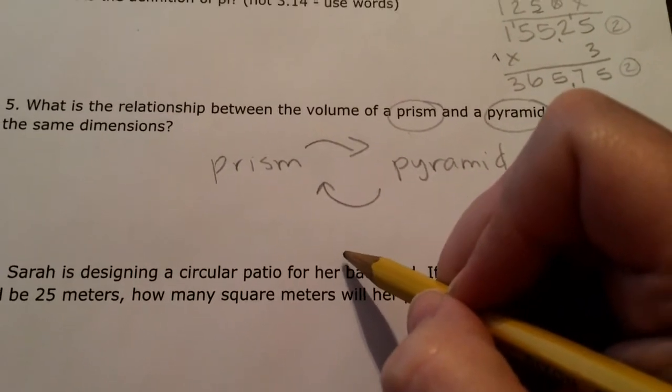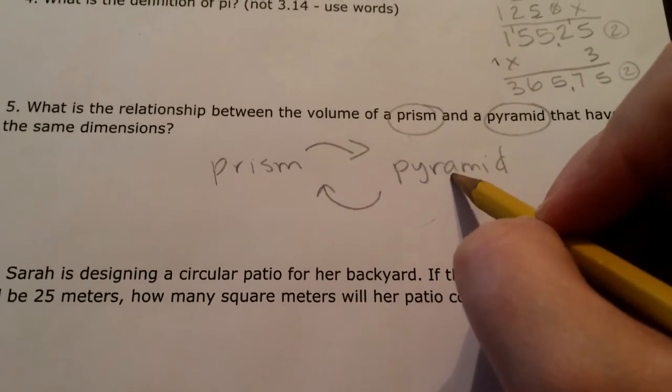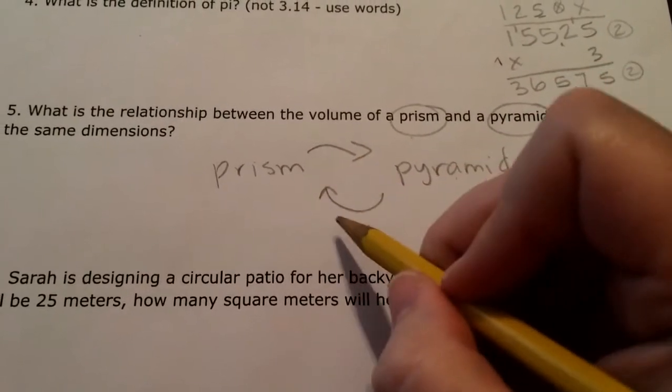Hmm, what did she say? Oh yeah, we talked about how a pyramid, it takes three of them to make a prism.